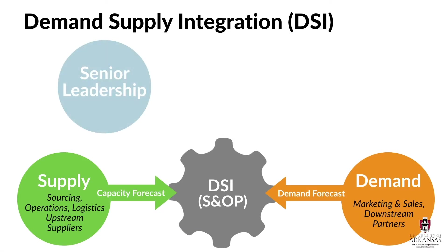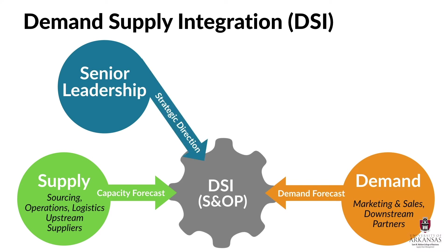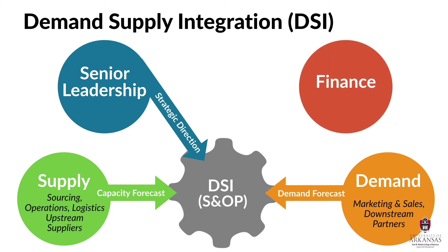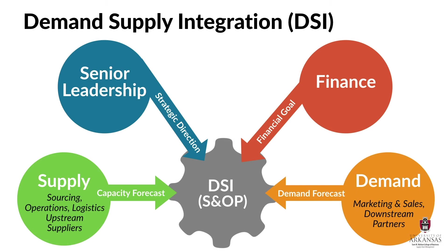Best practice says that senior management should be involved in this process to provide insights that could help everyone understand strategic priorities. Likewise, finance should provide input regarding financial goals and requirements of the firm. By sharing forecasts, strategy, and financial goals, decision-makers will have a much better idea of the opportunities and problems at hand. All major areas of the business will have a voice and should contribute ideas to resolve imbalances. After a sales and operations planning meeting, plans should be aligned in a way that balances demand and supply.